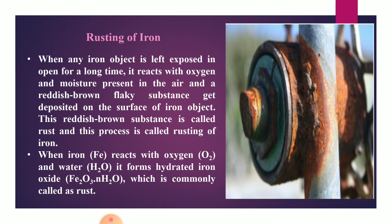We will discuss one example of chemical change, that is rusting of iron. As we know, in physical change no new substance is formed, whereas in chemical change there is always formation of one or more new substances. Rusting is a chemical change because at the end we get a new substance.